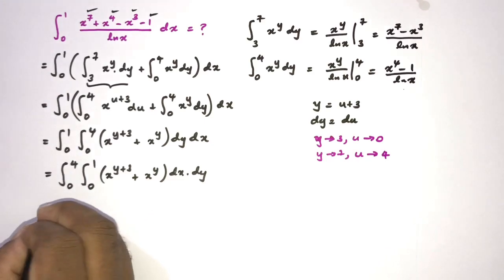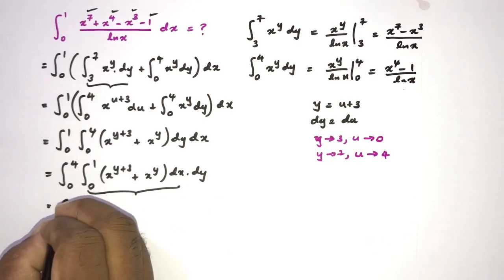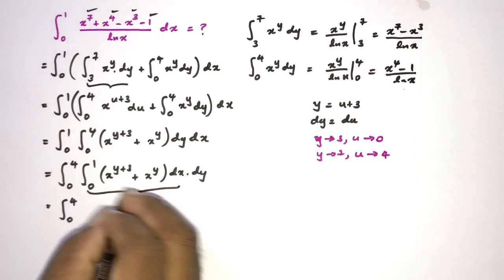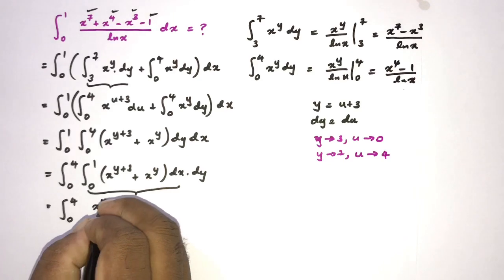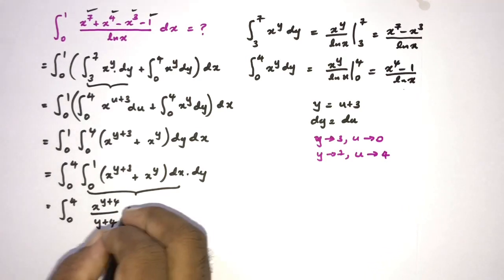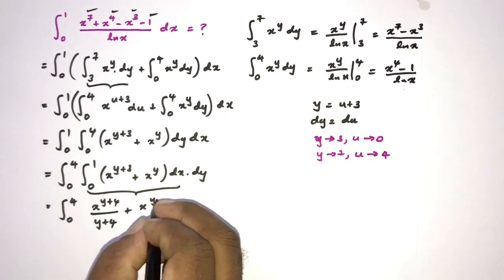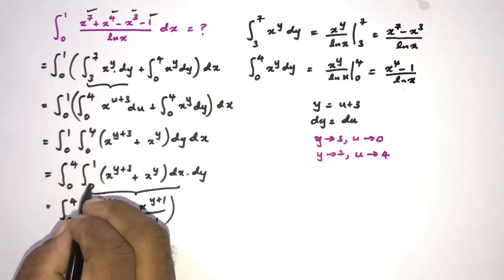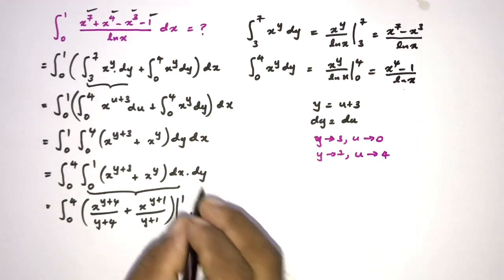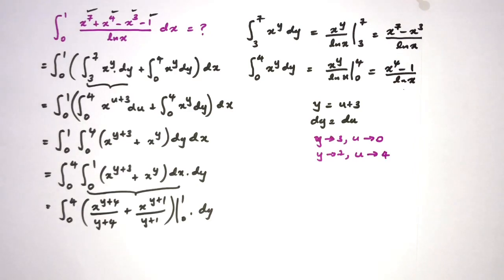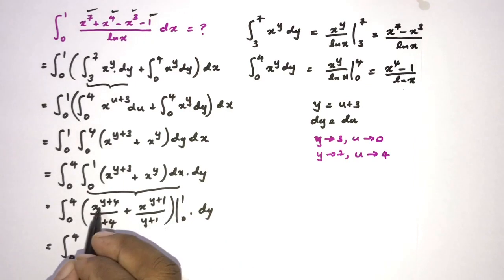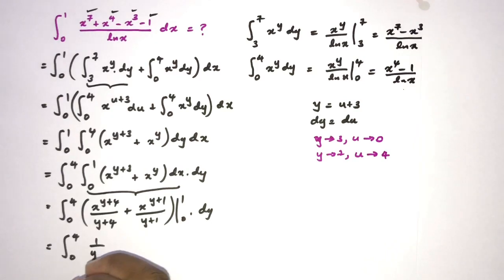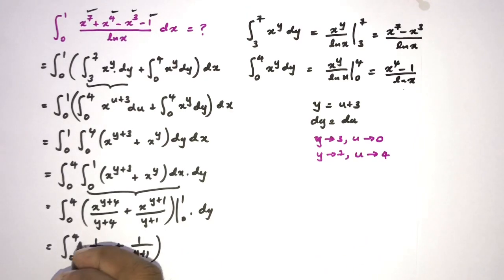Now we integrate with respect to x. The integral from 0 to 4 of x to the y plus 3 over y plus 4, plus x to the y plus 1 over y plus 1, evaluated from x equals 0 to 1. Applying the limits: at x equals 1 we get 1 over y plus 4 plus 1 over y plus 1; at x equals 0 we get 0. So we have the integral from 0 to 4 of 1 over y plus 4 plus 1 over y plus 1, dy.